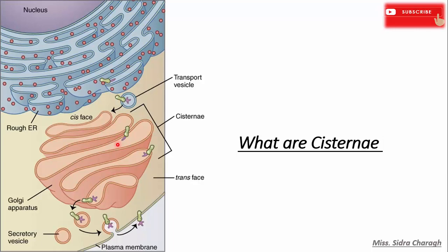There are almost four classes of Golgi cisternae: cis, medial, trans, and the trans-Golgi network, all of which contain different types of enzymes. Furthermore, the main function of cisternae is to pack and then modify proteins and polysaccharides.